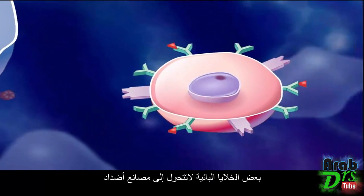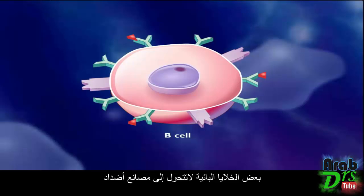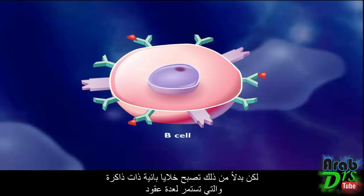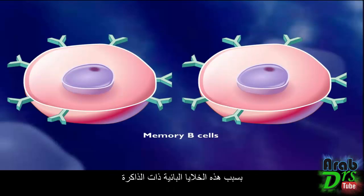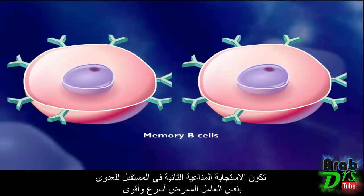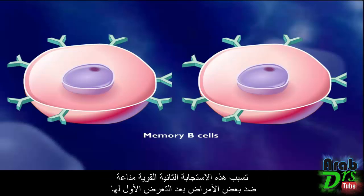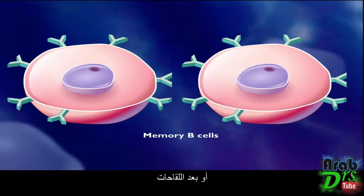Some of the B-cells do not turn into antibody factories, but instead become memory B-cells that may survive for several decades. Because of these memory B-cells, the secondary immune response to a future infection by the same pathogen is swifter and stronger. This powerful secondary immune response is what gives immunity to some diseases after you have had them once or after you have been vaccinated.